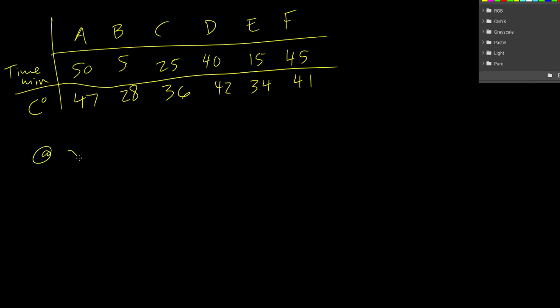So part A, we need to calculate the average of the x's and the average of the y's. So we're going to create that average point for our line of best fit.